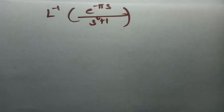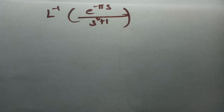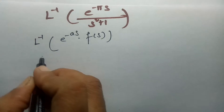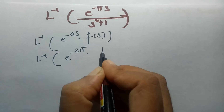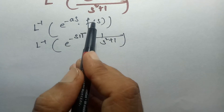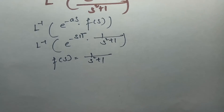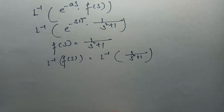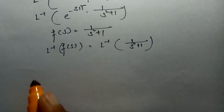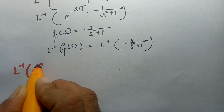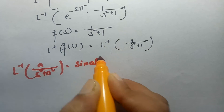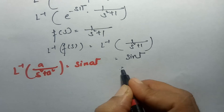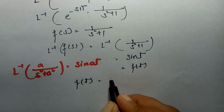The next problem is: find the inverse Laplace transform of e^(-πs)·(1/(s²+1)). This is of the form e^(-as)·F(s), where F(s) = 1/(s²+1). Applying inverse Laplace transform, and using the formula that inverse Laplace of a/(s²+a²) = sin(at), with a = 1, we get f(t) = sin(t).